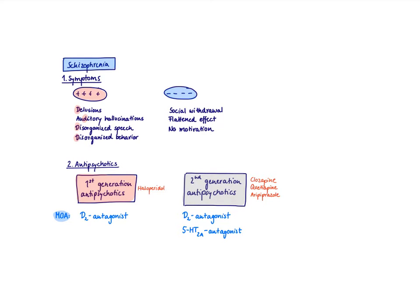Psychosis in a one-liner is a loss with reality. Your brain tells you things that are not true and you can't tell the difference. Psychosis is a syndrome, not a disorder by itself. It can be associated with many disorders. The most common form of psychosis is schizophrenia.